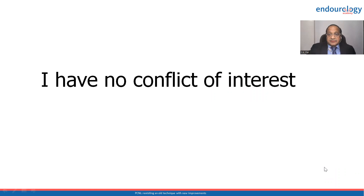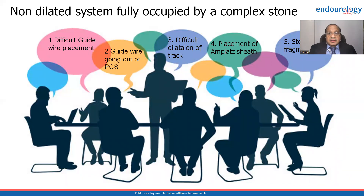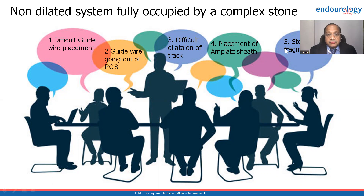I have no conflict of interest. Situations like this are not very rare or uncommon — when the kidney is burdened with stones all around and there is hardly any space to make an entry inside. How to deal with this complex situation? There will be difficulty in placing the guide wire, the guide wire may again and again go out of the pelvicalyceal system, there will be difficulty in dilatation of the track, placement of the access sheath will be different, and stone fragmentation has to be carried out very rapidly. We will discuss all these points one by one.